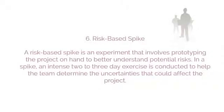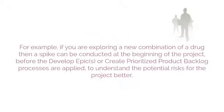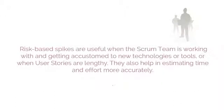A risk-based spike is an experiment that involves prototyping the project to better understand potential risks. In a spike, an intense two- to three-day exercise is conducted to help the team determine the uncertainties that could affect the project. For example, if exploring a new drug combination, a spike can be conducted at the beginning of the project, before the Develop Epics or Create Prioritized Product Backlog processes are applied. Risk-based spikes are useful when the Scrum team is working with new technologies or tools, or when user stories are lengthy. They also help in estimating time and effort more accurately.